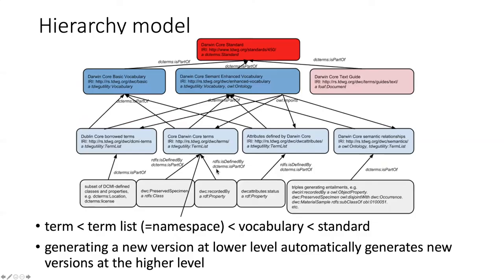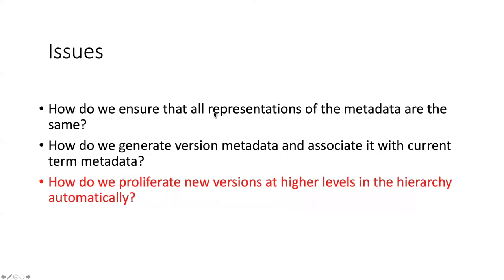There is also a hierarchy model which describes the way that vocabularies are constructed in TDWG. Vocabularies have terms which are grouped together in term lists — basically terms that share a similar namespace — and then those term lists are grouped together within a vocabulary. You can have one or more vocabularies within a particular standard. If you generate a new version at some lower level in the hierarchy, that will automatically spawn new versions of the higher levels as well. So how do we proliferate the new versions at the higher levels in the hierarchy automatically?